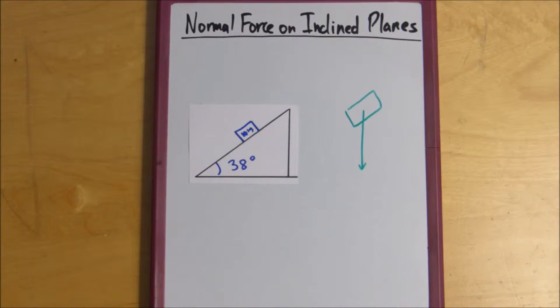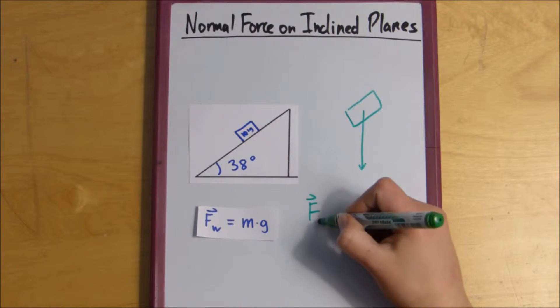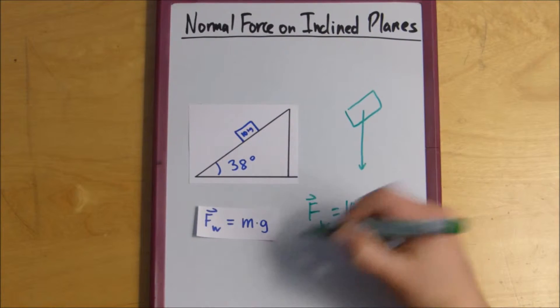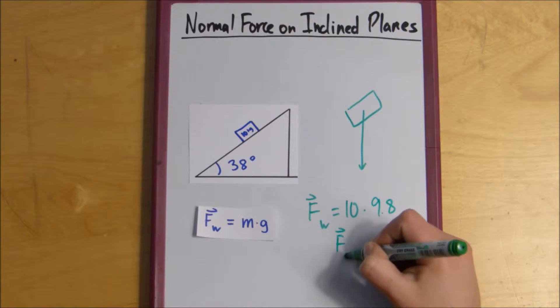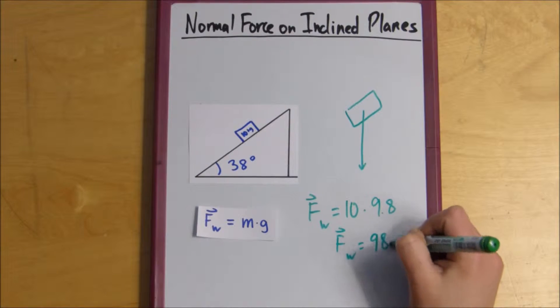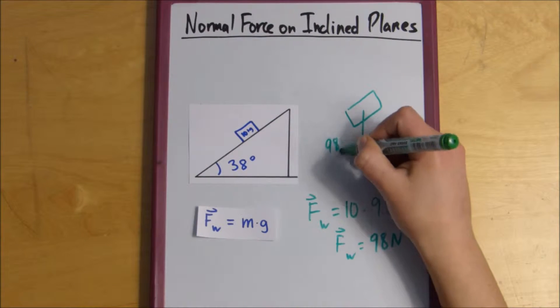And then we can solve for our weight force using this little equation. So weight force equals mass, 10, times gravity, 9.8. So our weight force is 98 newtons, so we can label it 98 newtons.